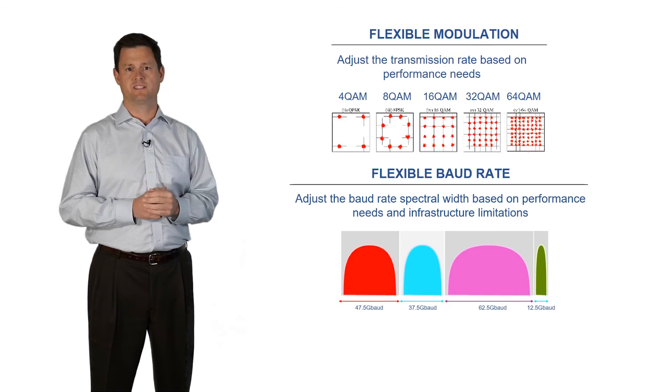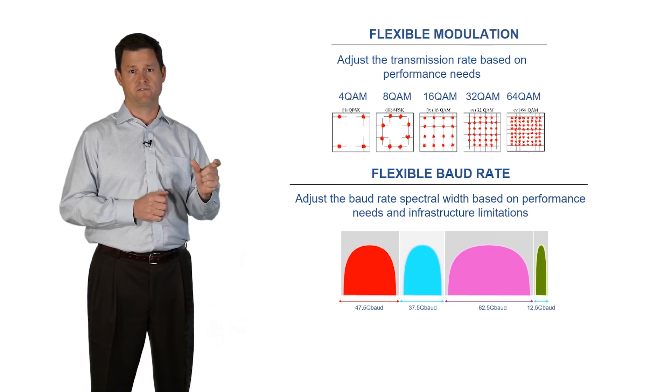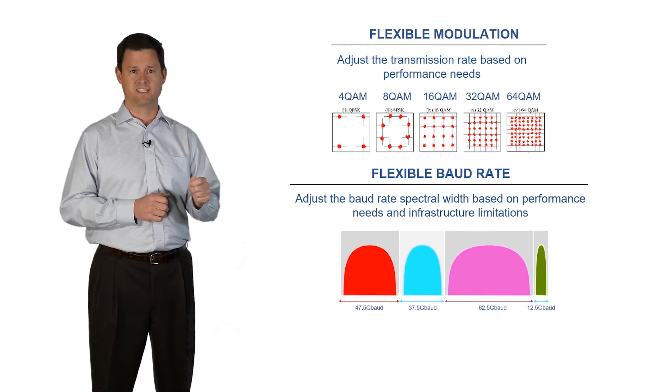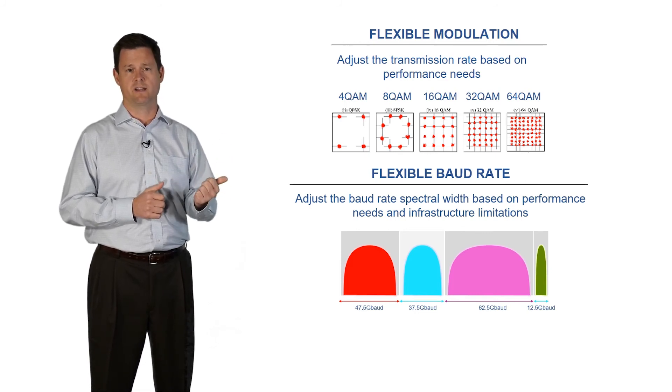Because higher baud rate signals can expand beyond the traditional 50 GHz ITU grid, they typically require a flexigrid ROADM solution, which I talk about in another video.